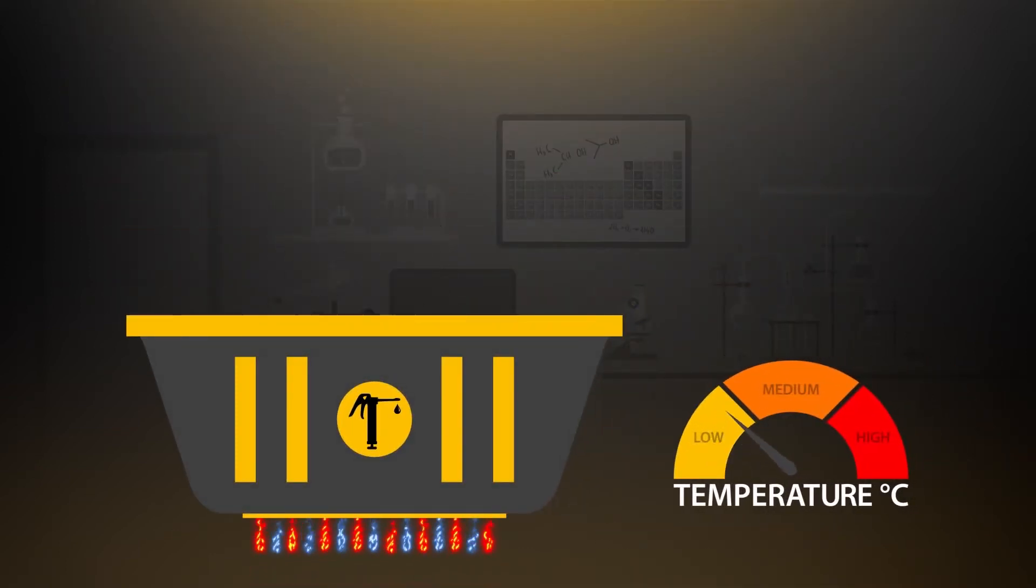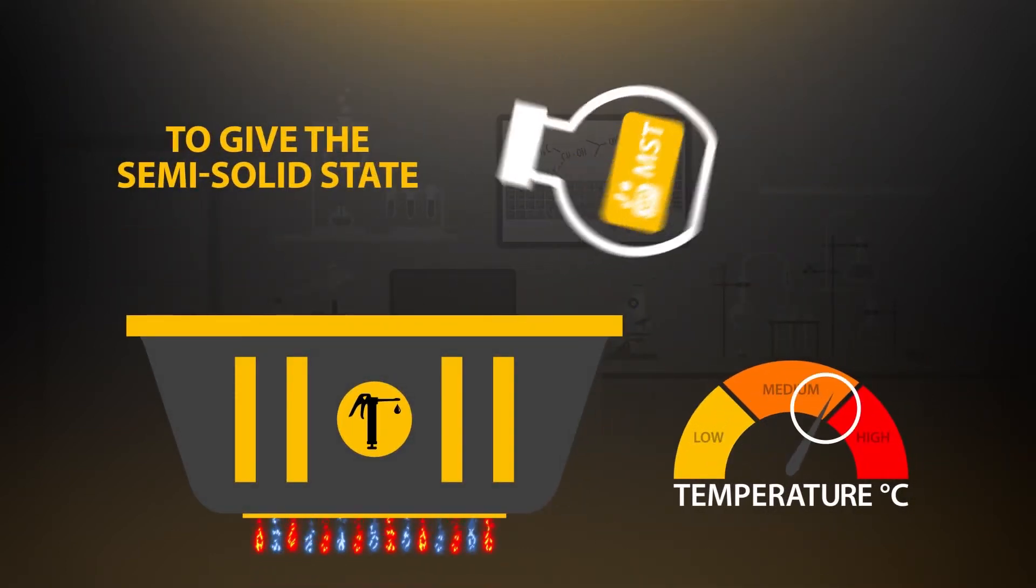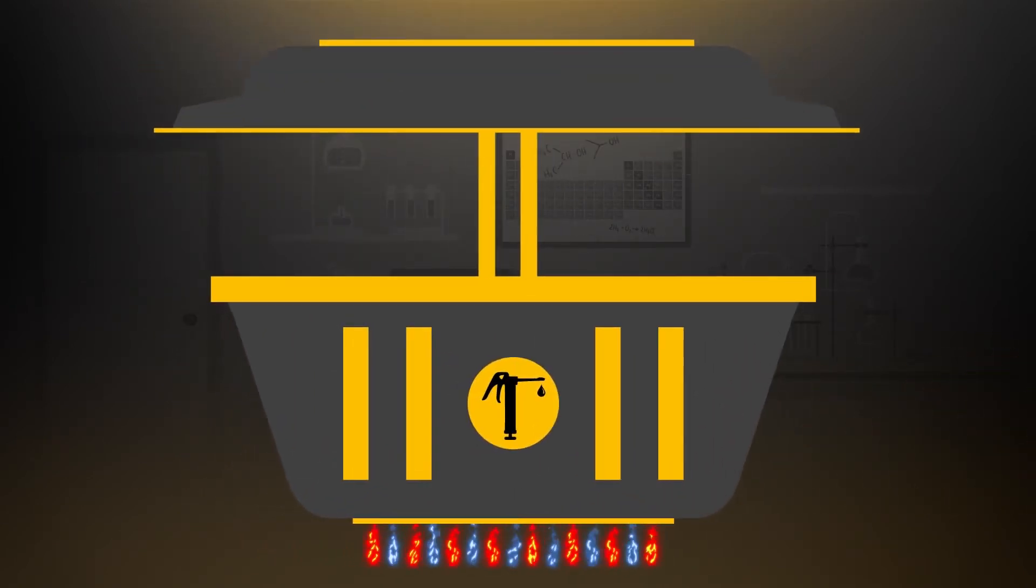Oil is heated in vats and the metallic soap thickener is added at a specific temperature. It is mixed and sheared into the oil.